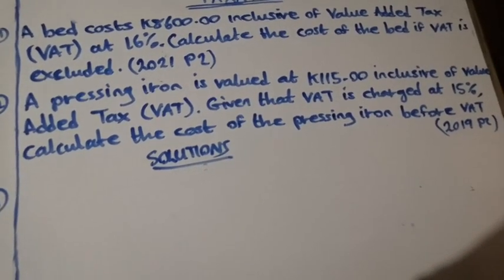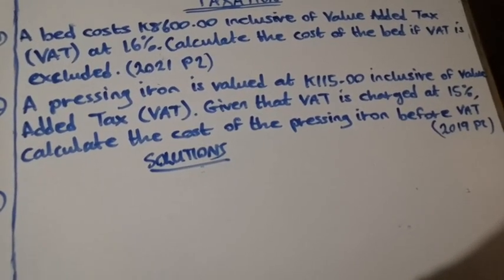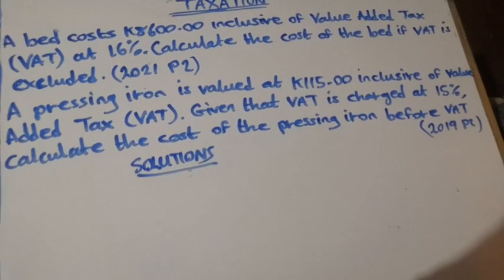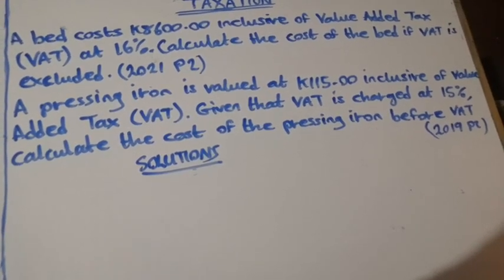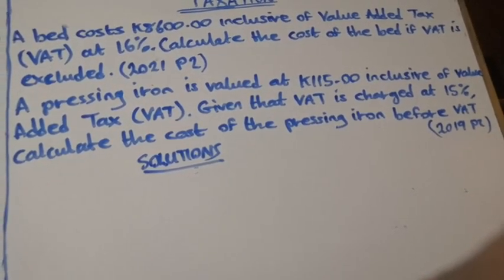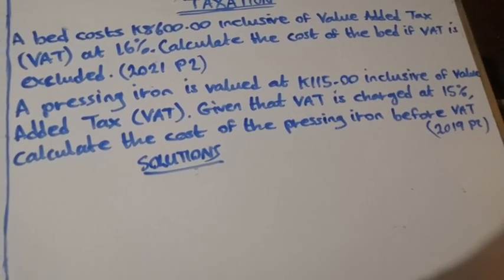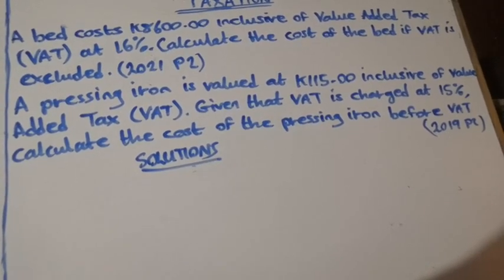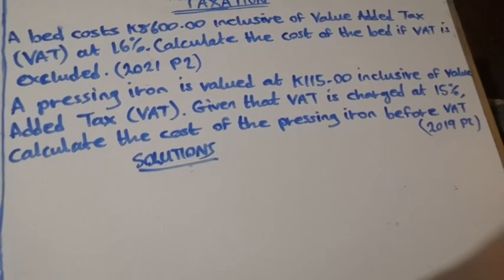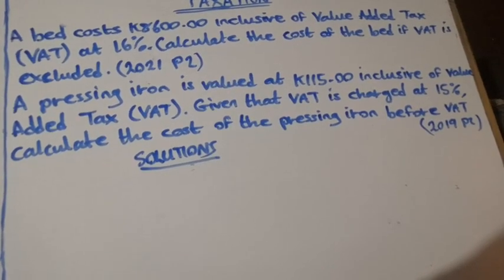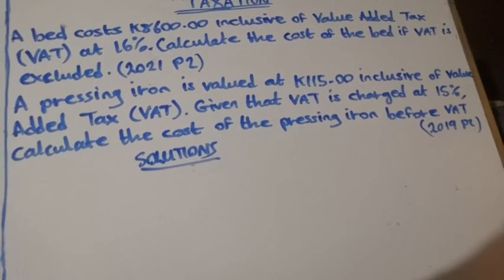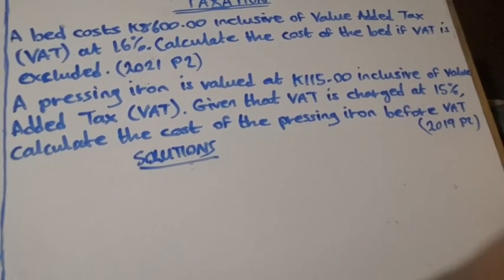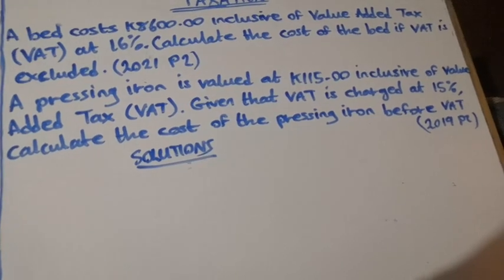We go to question 2. A pressing iron is valued at 115, inclusive of value-added tax, VAT. Given that VAT is charged at 15%, calculate the cost of the pressing iron before VAT.